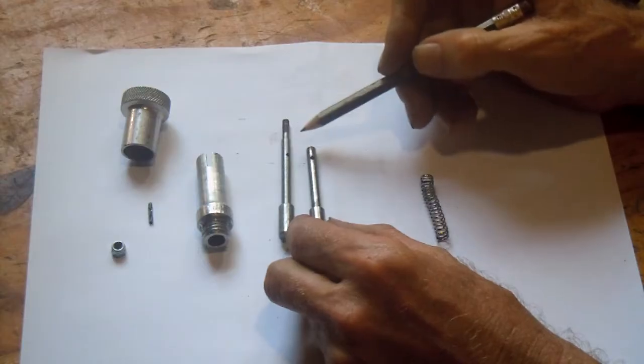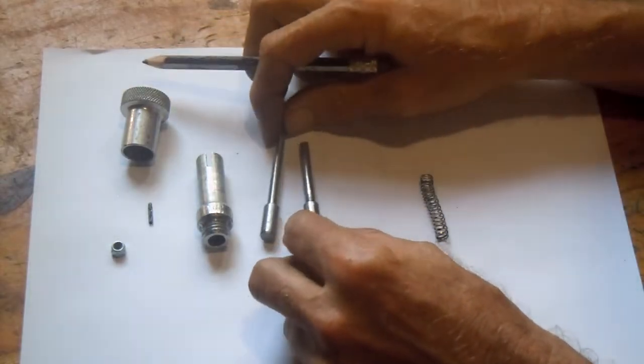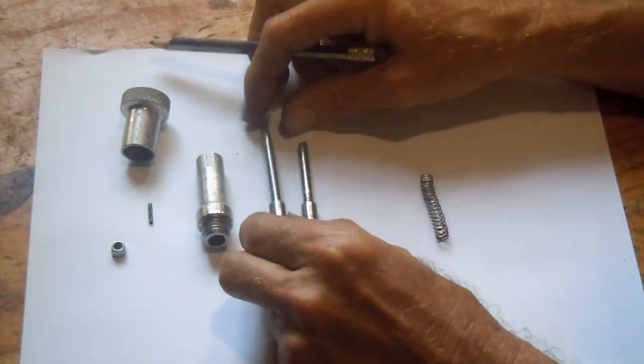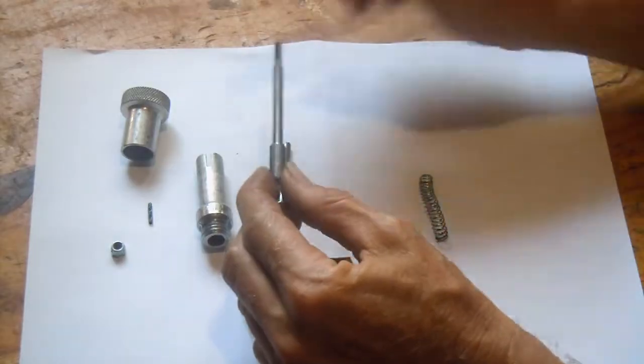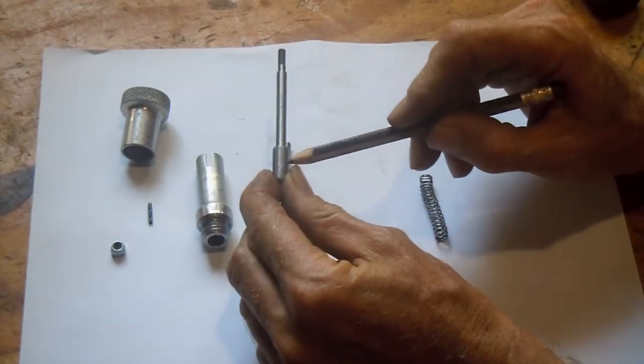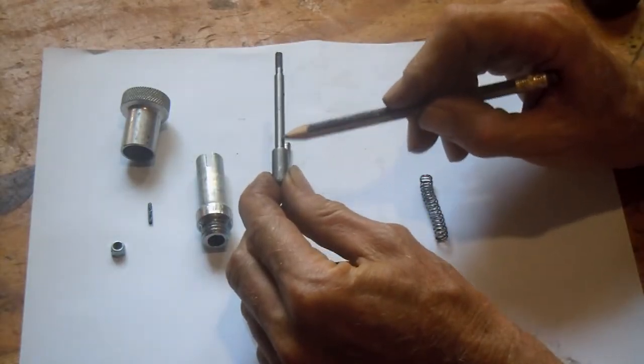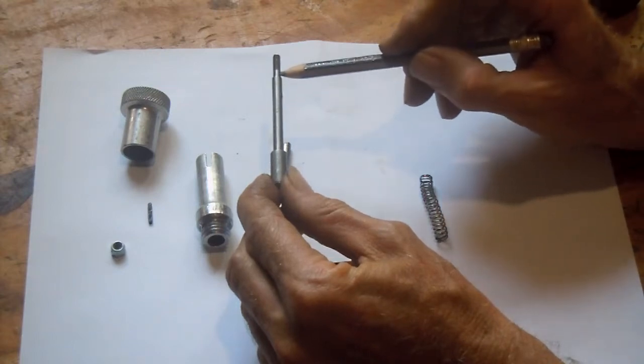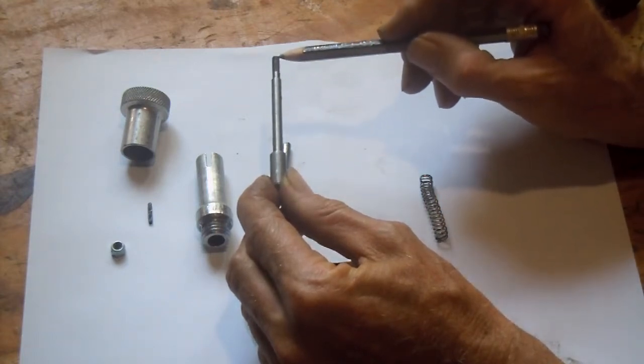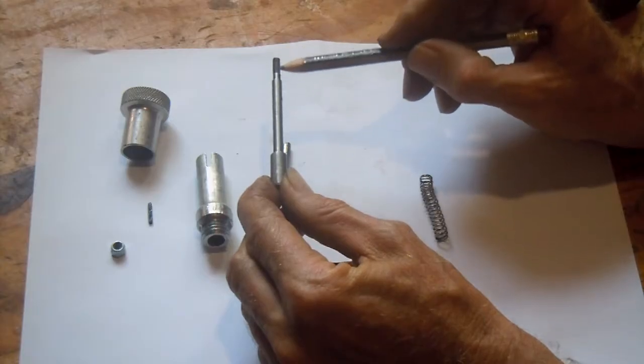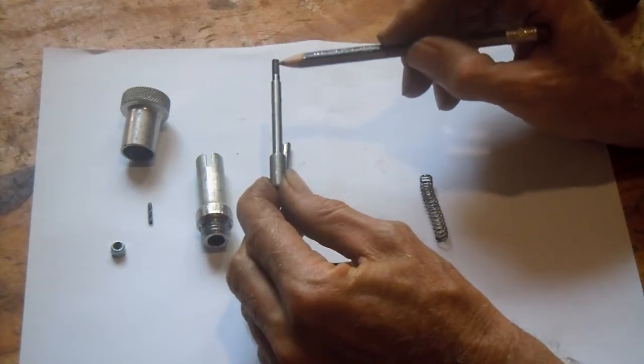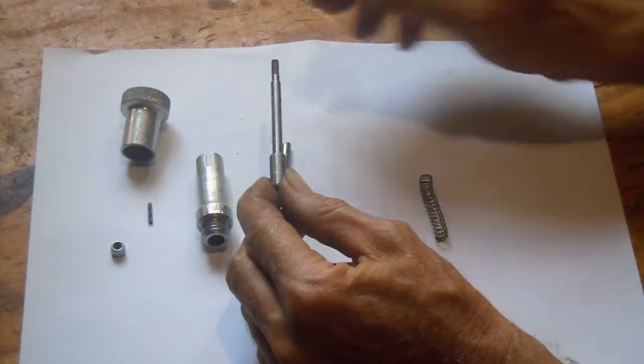Basically what this pin consists of: it's got an eight millimeter diameter at the bottom here, then it goes into five millimeters, and then it goes on to just a little smaller than four millimeters to be able to cut a four millimeter thread on there, which is on there now.